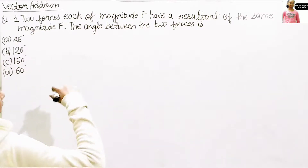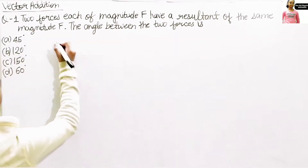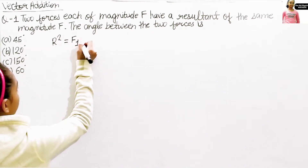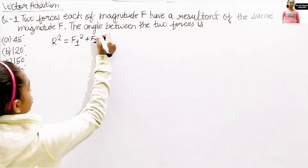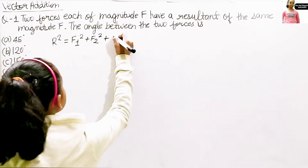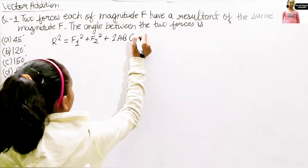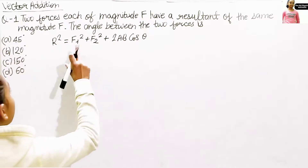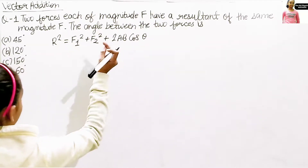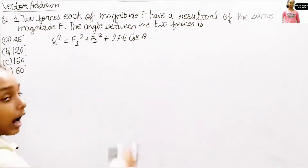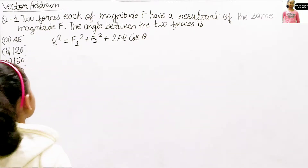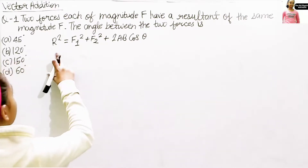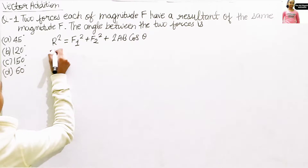Let me use the formula. The formula is R² = F1² + F2² + 2AB cosθ. R² = F1² + F2² + 2AB cosθ. We can also take it under square root — under root and square root are both the same. So what is our resultant? It is F, so it will be F².